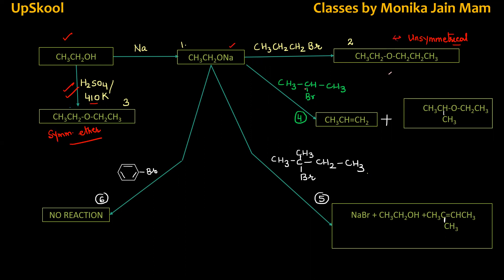Then fourth number, if we are adding secondary alkyl halide. Look carefully students, above we have used primary alkyl halide, this is secondary. The product is alkene plus ether.